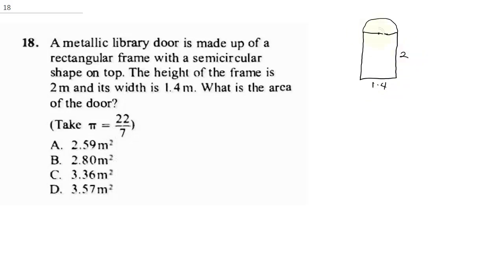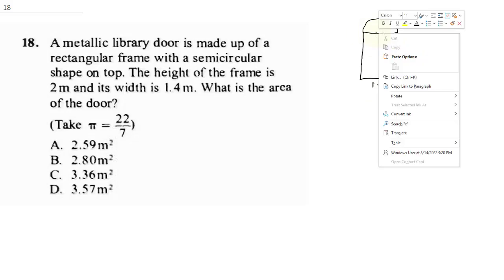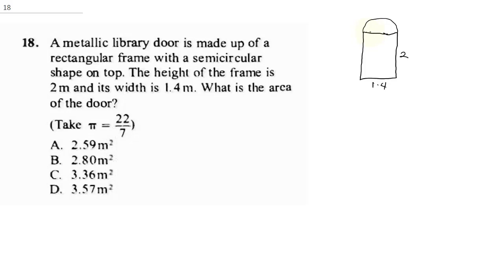If this is 1.4, notice this is also 1.4 and this is the center of our semicircle. For the rectangle, the area will be 2 times 1.4, which is 2.8 meters squared.